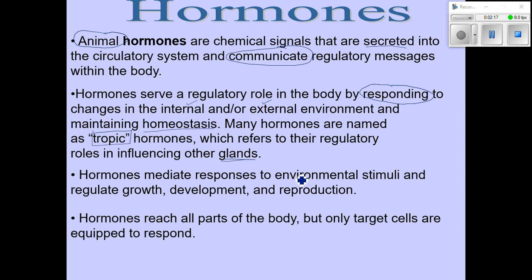Hormones are released in response to all kinds of different stimuli and have many different functions throughout the body. Just three examples are growth, development, and reproduction. In terms of long-term communication, they can reach all parts of the body, but it is not all cells, tissues, and organs that are going to respond to a given hormone. It's only those referred to as target cells — the ones that have receptors specific for that particular hormone, of which there are dozens produced by the human body.